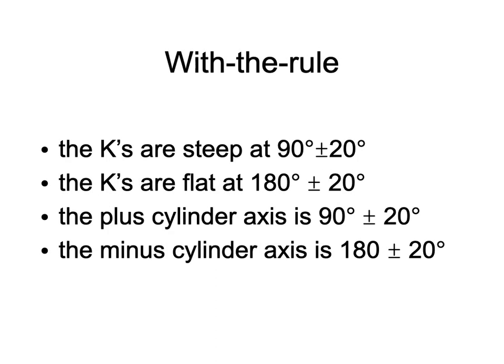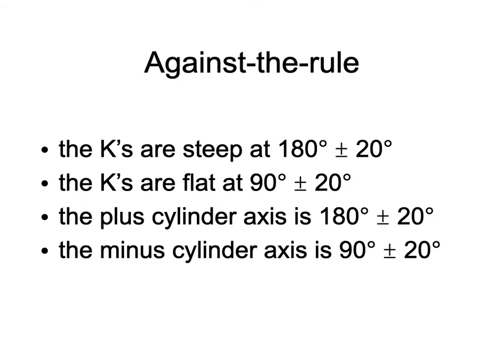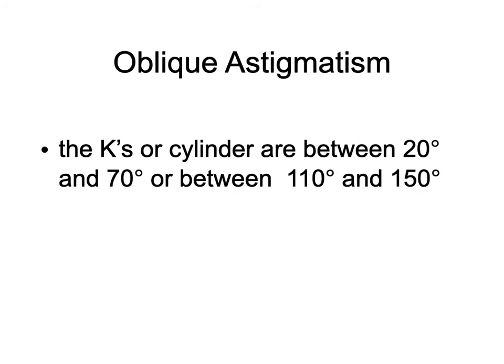With the rule means the cornea is steep at 90 degrees (plus or minus 20), so an axis of 80 or 100 is still with the rule, and flat at 180. The plus cylinder aligns with where the cornea is steep — if the plus cylinder is at 90 (plus or minus 20), that is with the rule. Or if the minus cylinder axis aligns with the flat meridian of the cornea at 180, that is also with the rule. Against the rule is the opposite of all that. Oblique is anything outside that 20-degree range.